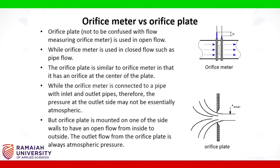The orifice plate, not to be confused with the flow-measuring orifice meter, is used in open flow, while the orifice meter is used in closed flow such as pipe flow. The orifice plate is similar to the orifice meter in that it has an orifice at the centre of the plate. While the orifice meter is connected to a pipe with inlet and outlet pipes, the pressure at the outlet side may not be essentially atmospheric. But the orifice plate is mounted on one of the side walls to have an open flow from inside to outside, so the outlet flow from the orifice plate is always at atmospheric pressure.